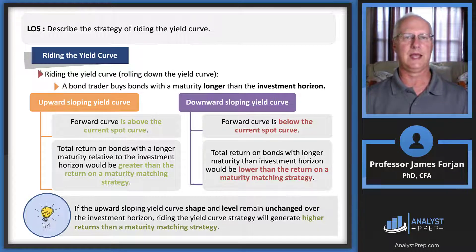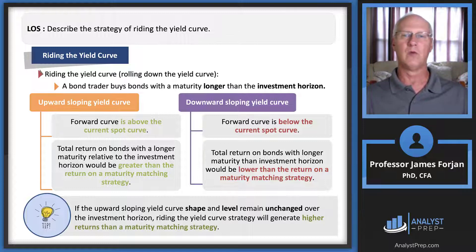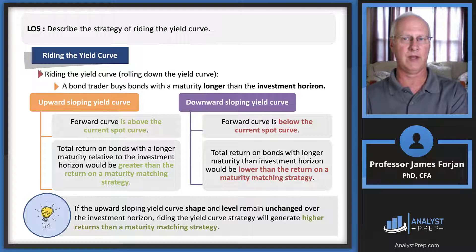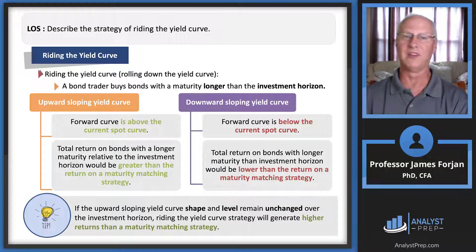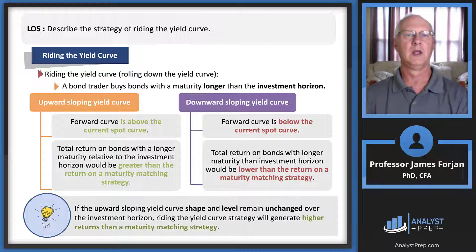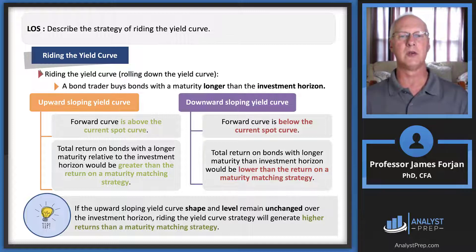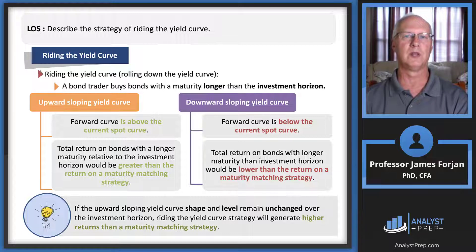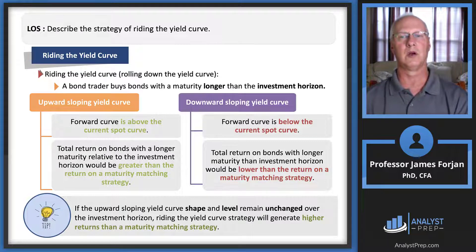Riding the yield curve is a strategy where we buy bonds with maturity dates longer than the investment horizon. This is different from bond immunization, where we match a bond's duration to the investment horizon. With riding the yield curve, the maturity is simply longer than the investment horizon. A practice question in the reading asks which strategy is riding the yield curve, and the answer is: buying bonds with maturity longer than the investment horizon.